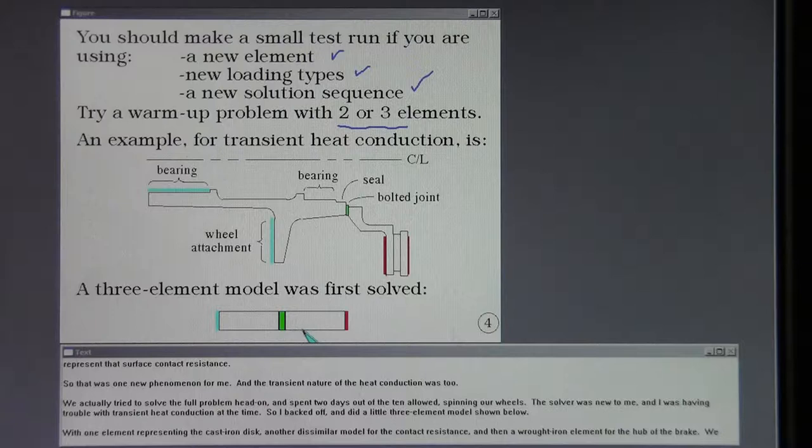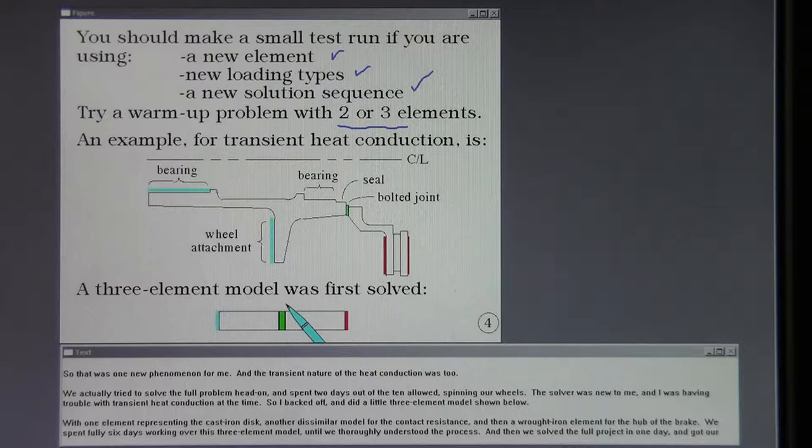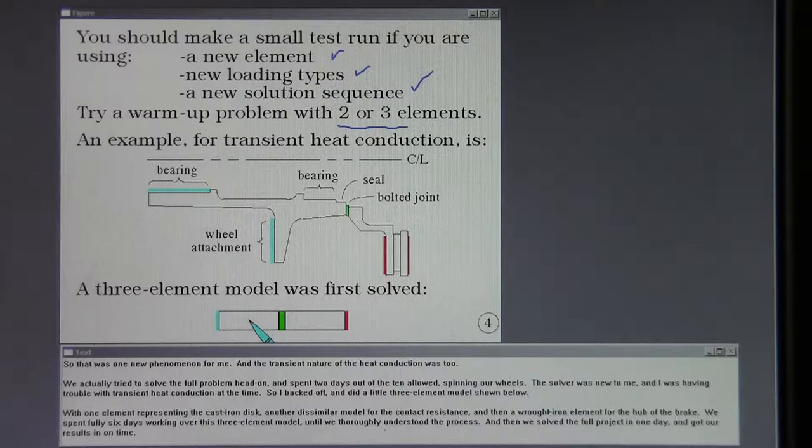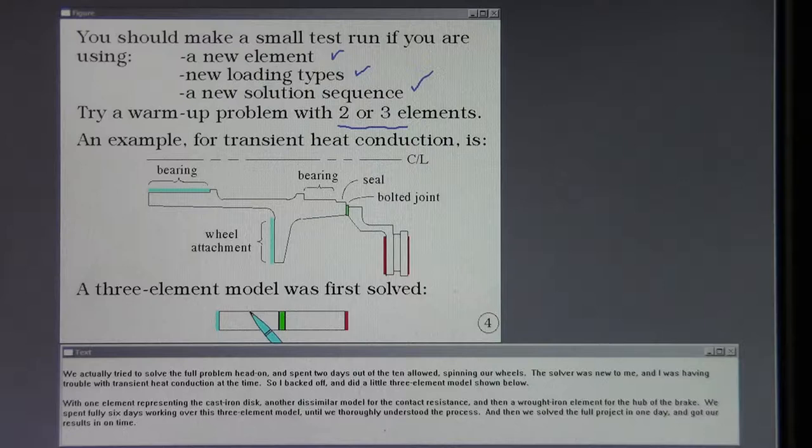I backed off and did a little three-element model shown below, with one element representing the cast iron disc, another dissimilar model for the contact resistance, and then a wrought iron element for the hub of the brake. We spent fully six days working over this three-element model until we thoroughly understood the process. And then we solved the full project in one day, and got our results in on time.